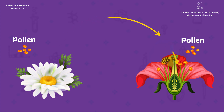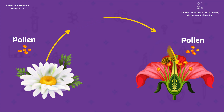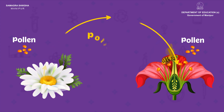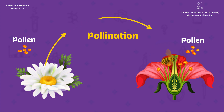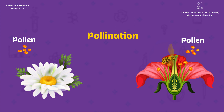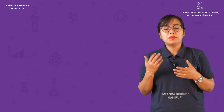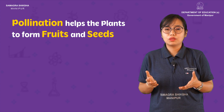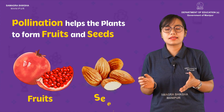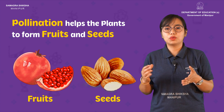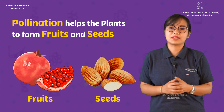The transfer of pollen from one flower to the other is called pollination. It helps the plants to form fruits and seeds.